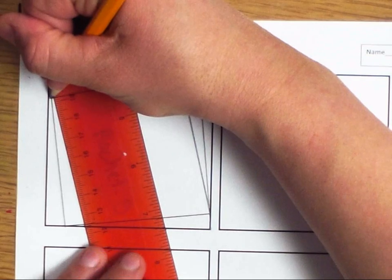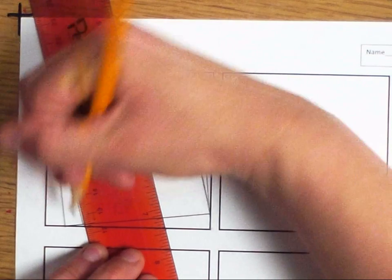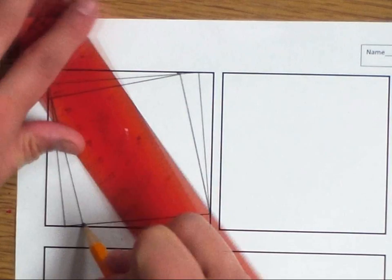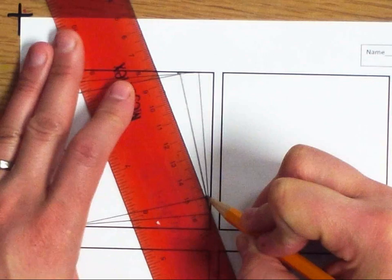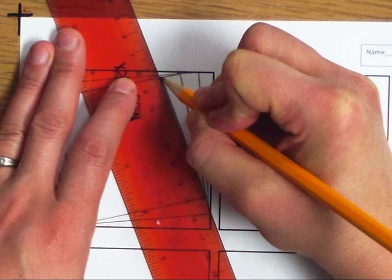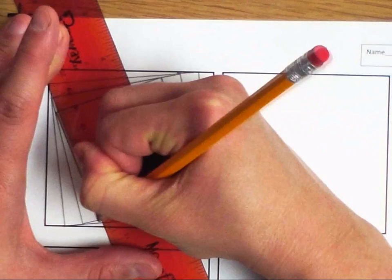If you make these triangles too wide or too fat, what will happen is it won't create the illusion of this spiral. So you want to make them skinny to create that illusion.